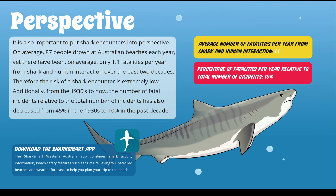One great way to be shark smart when you go to the beach is to download the Shark Smart app. It combines shark activity information and beach safety features such as lifesaving, and allows you to plan your trip to the beach better. You'll be able to see where there are shark nets, smart drum lines, where sharks have been spotted through drones, and any tagged sharks that have gone near the acoustic towers.